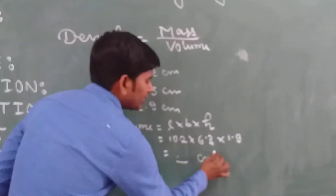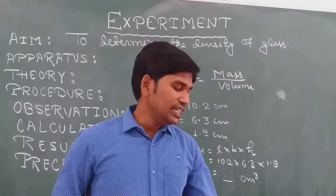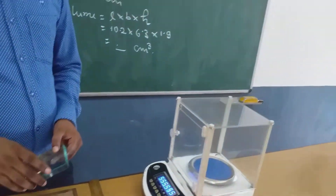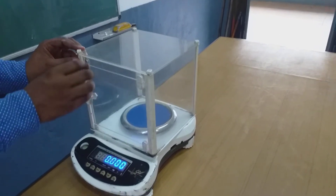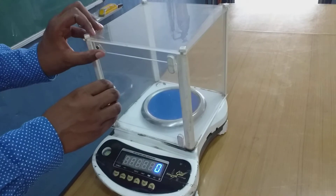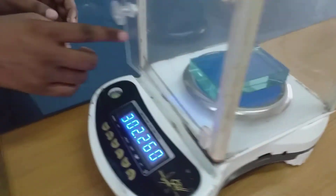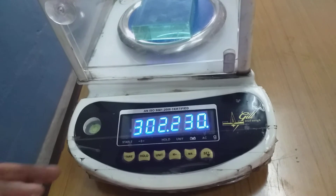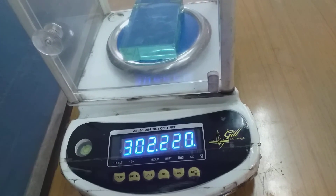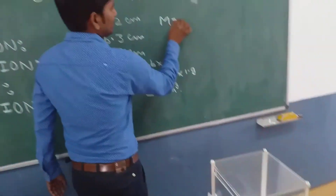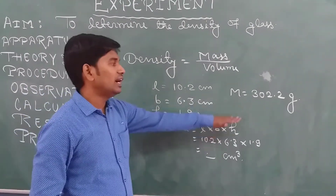We can calculate the mass of the glass slab using our electronic balance. We switch it on and then place the glass slab on it to measure the mass. As we can see, the mass reads 302.22 grams.